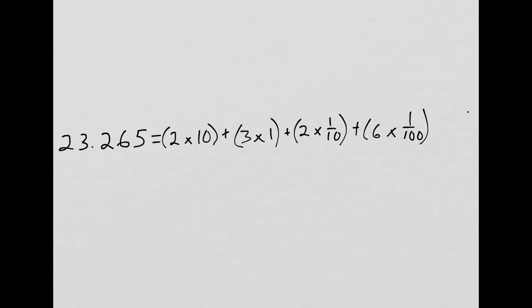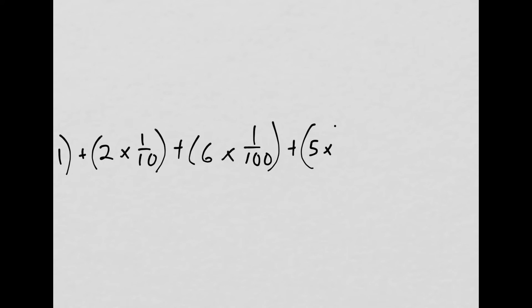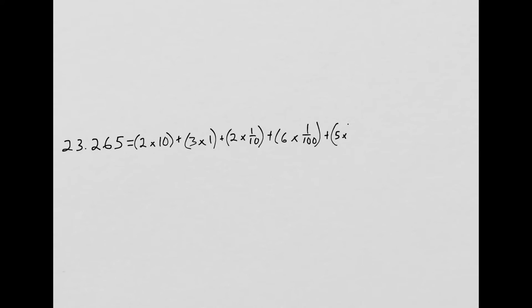And finally, the thousandths. I'm going to add 5 times—sorry about that little mess up in the video there. The 5 thousandths, I'm going to represent as 5 times 1 thousandth. It looks complicated, but when you do it step by step, it's really pretty straightforward.